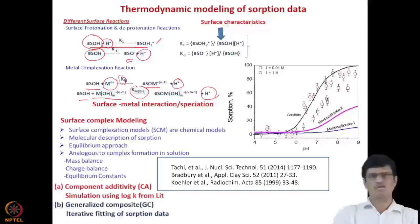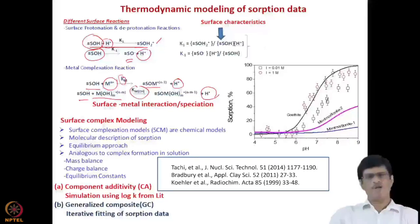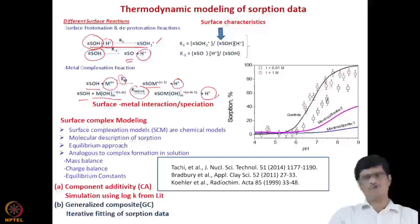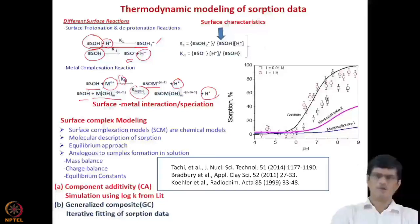There are two approaches in the surface complexation model: the component additive (CA) model, where log K values from the literature are used, weightage is given to the fractions of each clay mineral, and data are modeled and matched with experimental data; and the generalized composite (GC) approach, where iterative fitting of sorption data is performed to identify the composition and mechanism of actinide adsorption onto clay minerals.